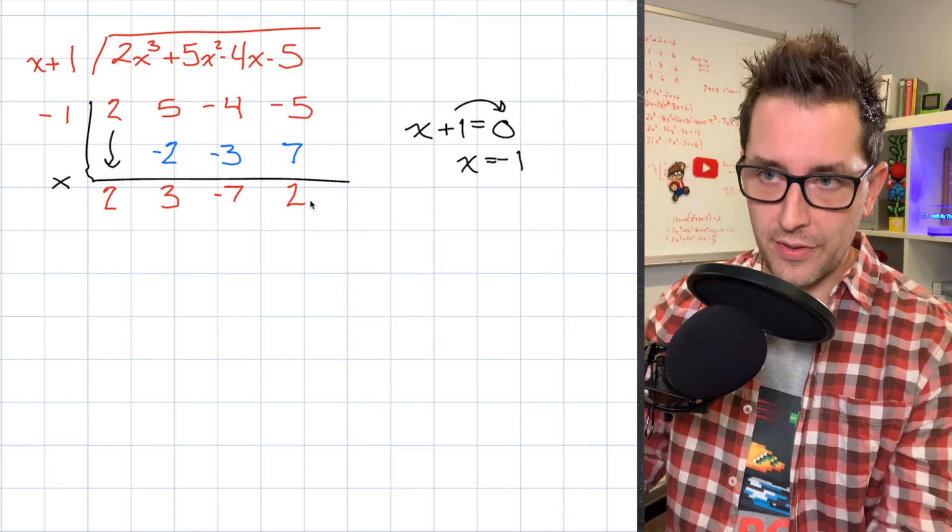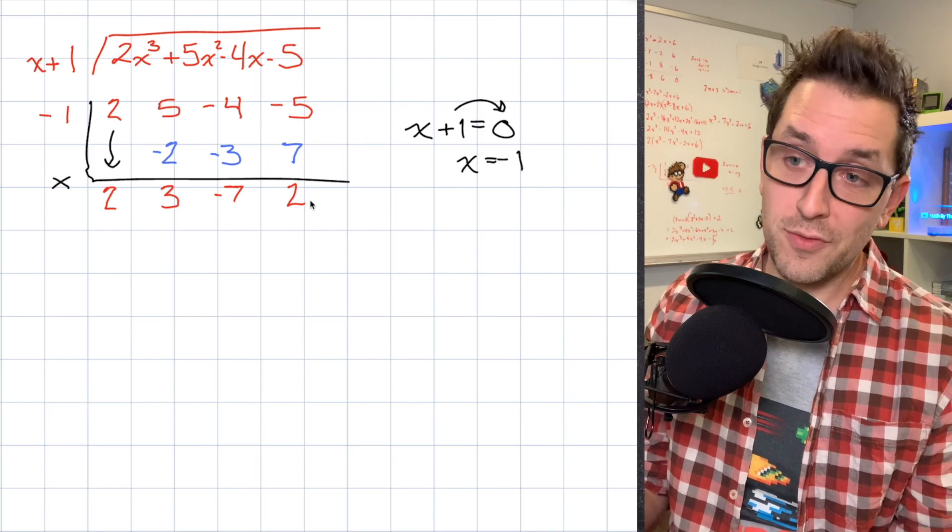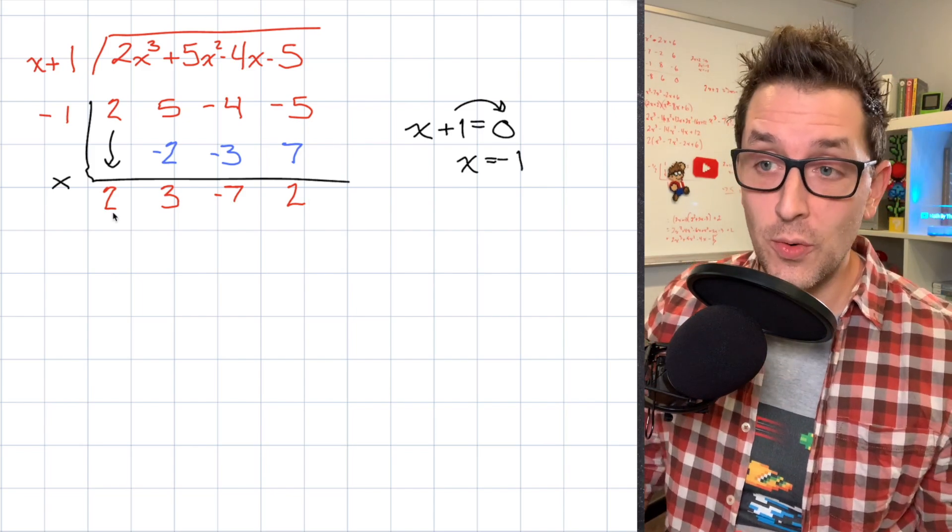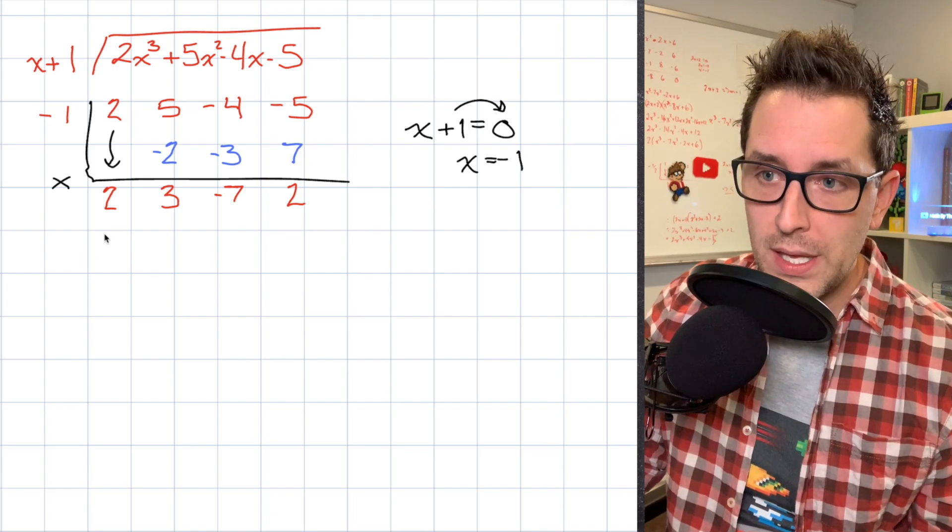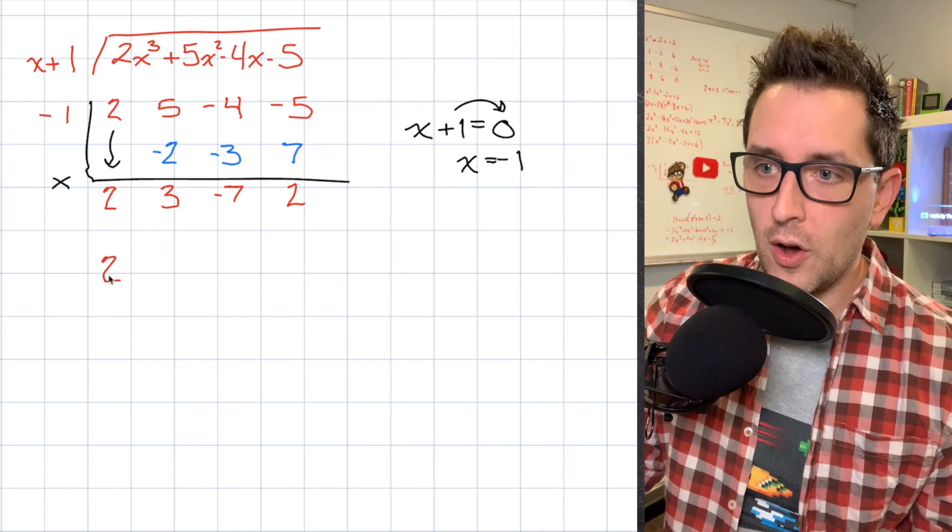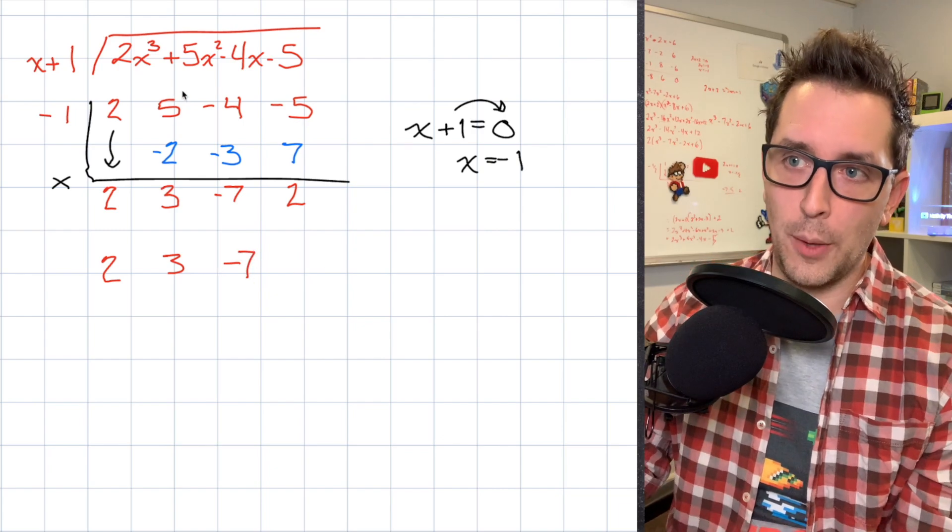Alright, so that's really it for the synthetic division process. But what have we done here? Well, we've created a bunch of random numbers. But as it turns out, these numbers are a lot less random than you might think. In fact, they end up being the coefficients on the quotient that we get when we divide our polynomial up here by our binomial of x plus 1.